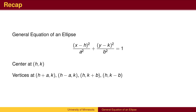To recap: when written in standard form, the center of an ellipse is at (h, k). The vertices in the x-direction are a distance of a from the center, and the vertices in the y-direction are a distance of b from the center.